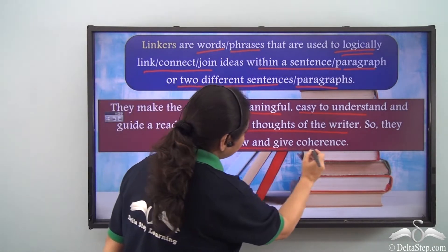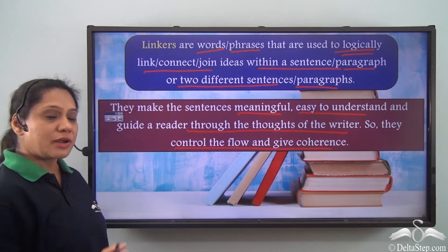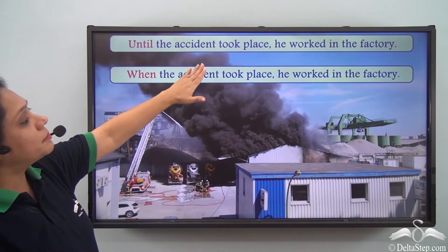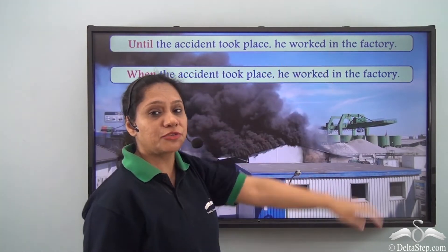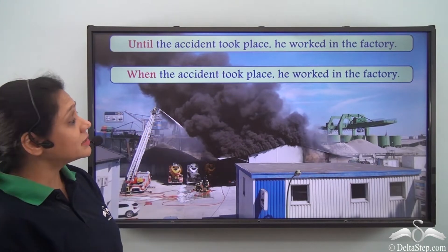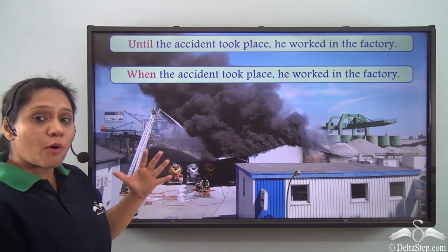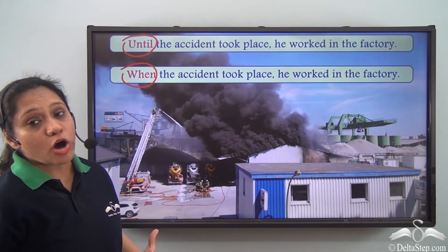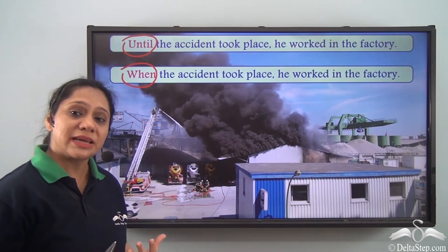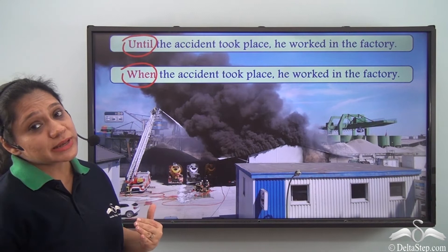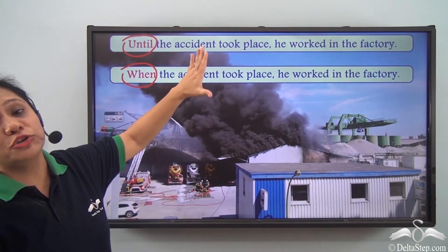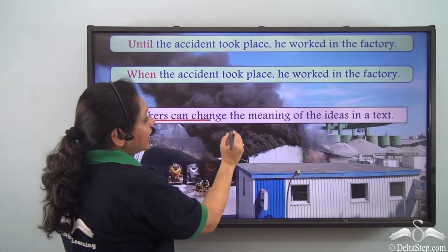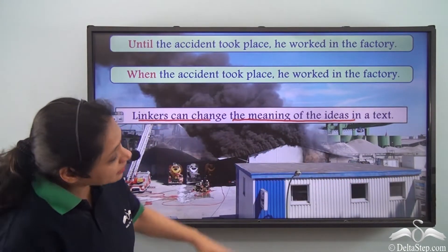Linkers control the flow and give coherence in any piece of writing. Now let us read these two sentences: 'Until the accident took place, he worked in the factory.' 'When the accident took place, he worked in the factory.' In both sentences, 'until' and 'when' behave like linkers because they join two ideas within the same sentence. But if you notice carefully, both sentences portray different ideas. So we see that linkers can change the meaning of the ideas in a text.